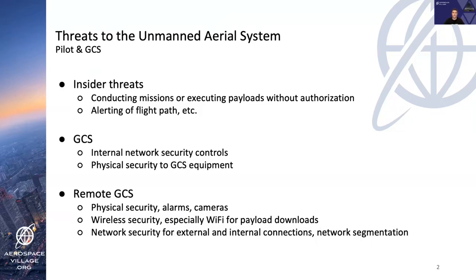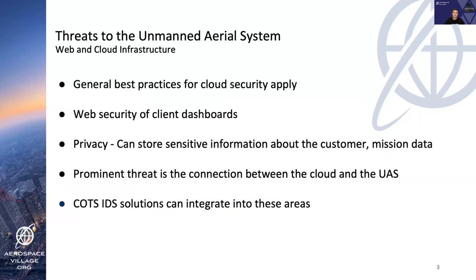Remote ground control stations can be deployed in very remote or even hostile locations for autonomous UAVs, making physical security very important, as is both wired and wireless security. Something as simple as connecting to a networked weather station could lead to a complete compromise. Many systems also make use of web or cloud infrastructure for back-end processing or client reporting portals, where best practices in web and cloud security apply. Commercial off-the-shelf intrusion detection systems can be integrated into this type of infrastructure as it's just a traditional IT system.